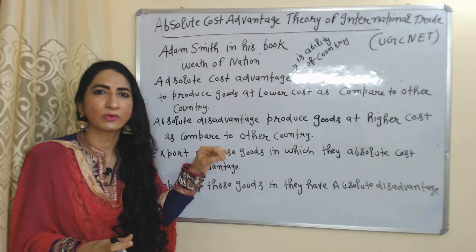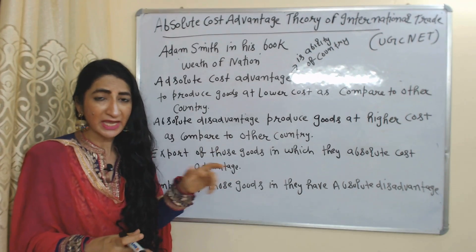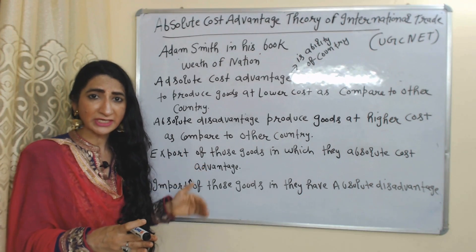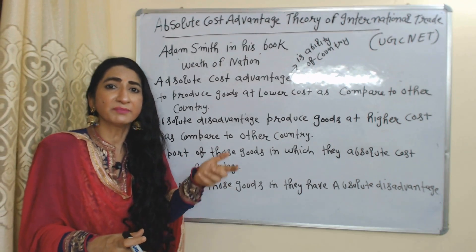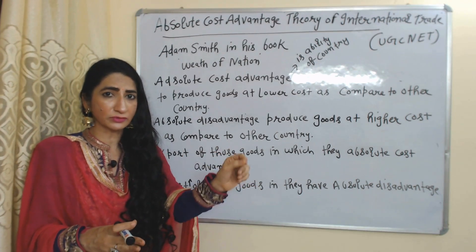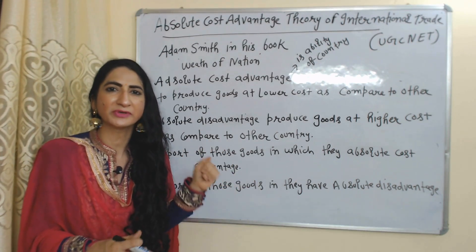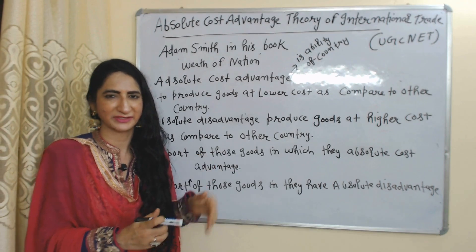According to this theory, a country should increase production and export of those goods in which they have absolute cost advantage, and should reduce production and increase import of those goods in which they have absolute disadvantage.